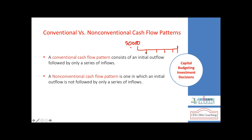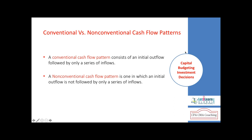When accepting or rejecting a project, we look not just at the investment but also at the result. Acceptance depends on ranking based on the amount invested and the amount received. The next terms to understand in capital budgeting are conventional and non-conventional cash flow patterns.